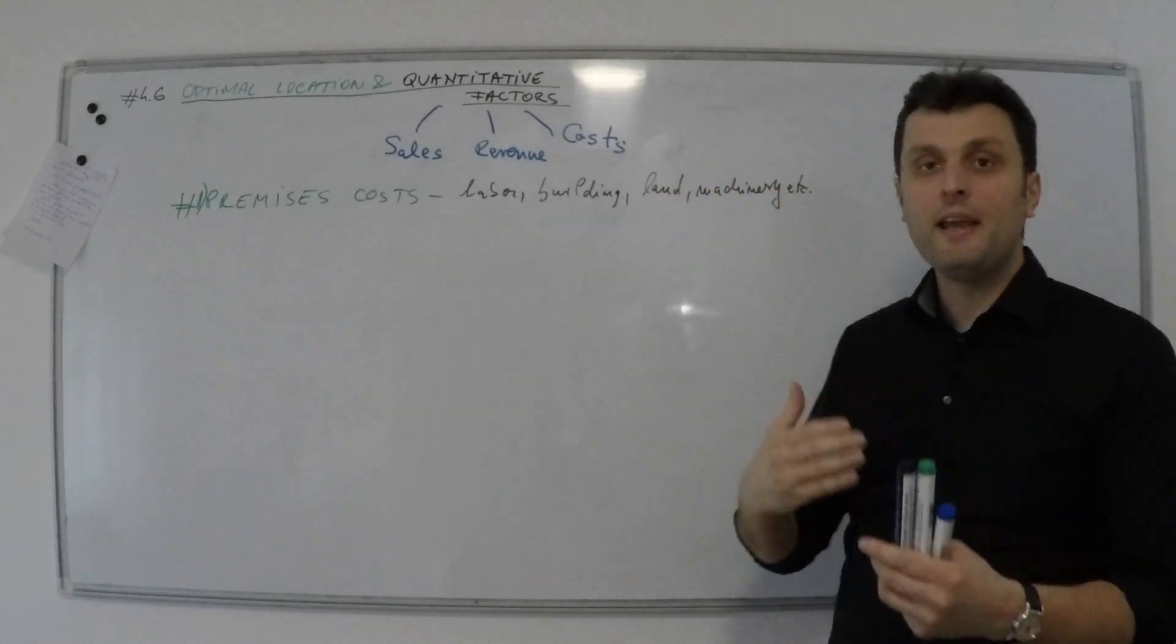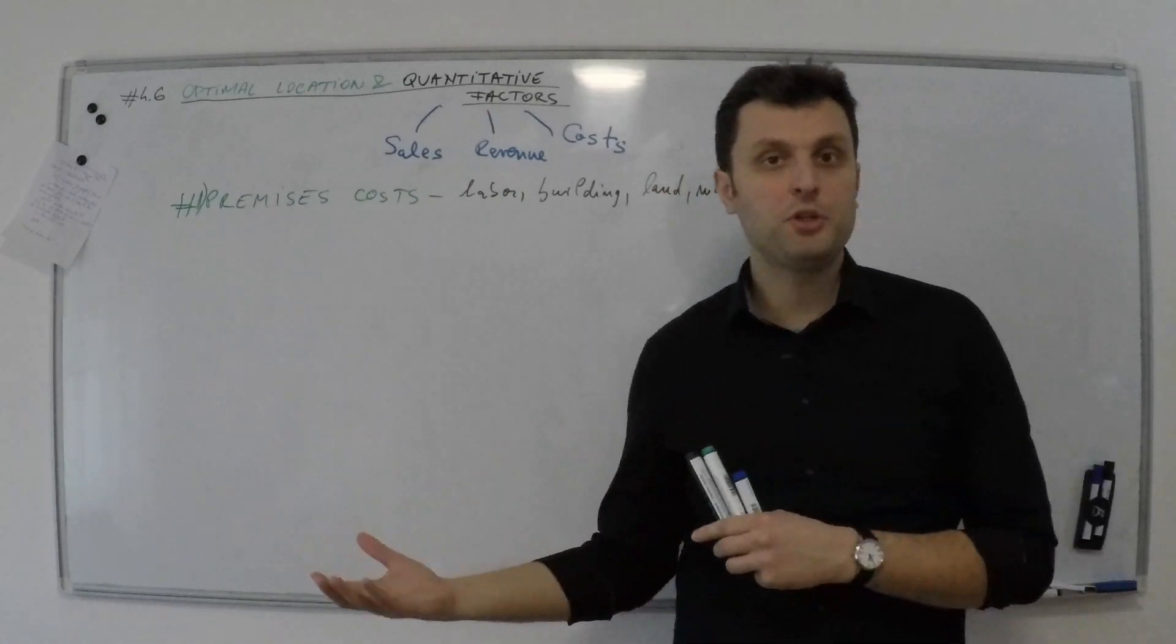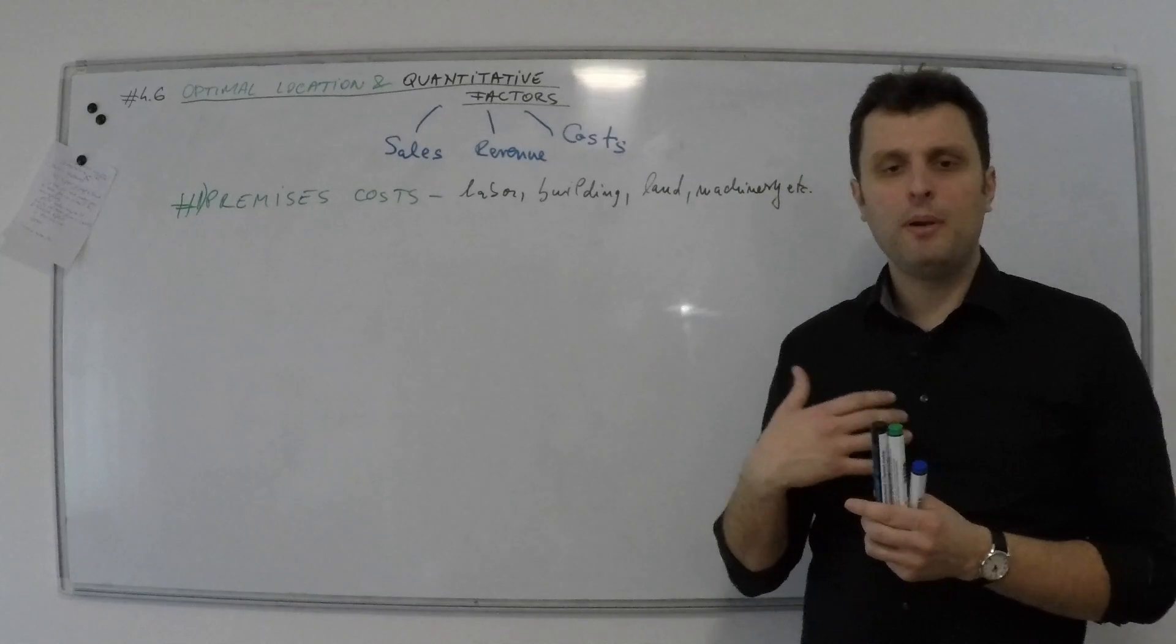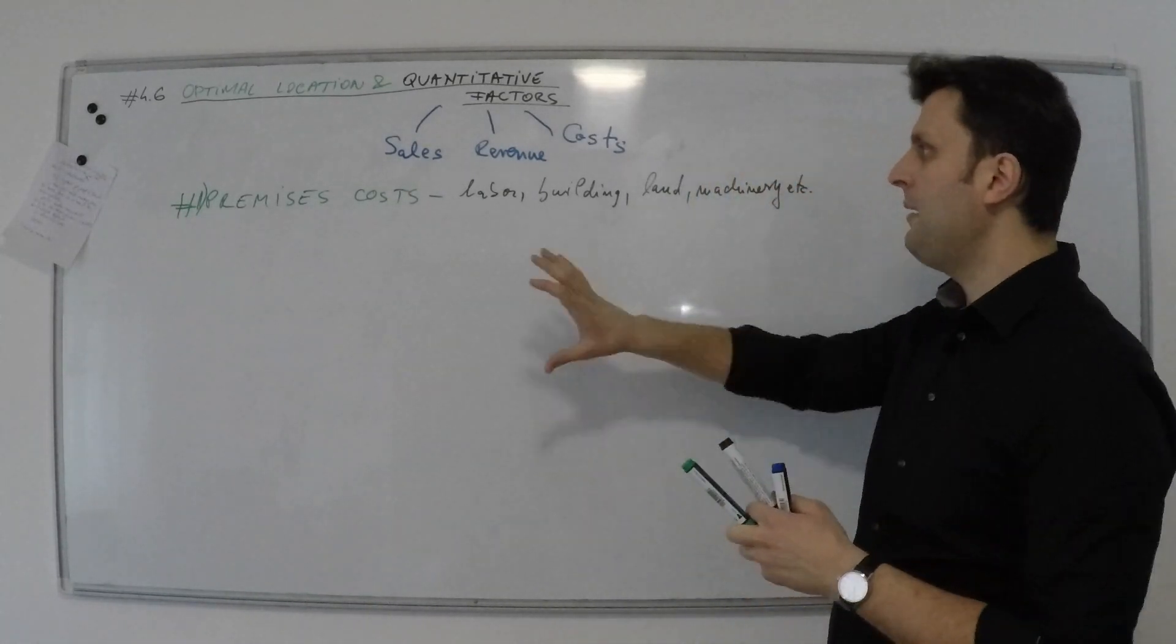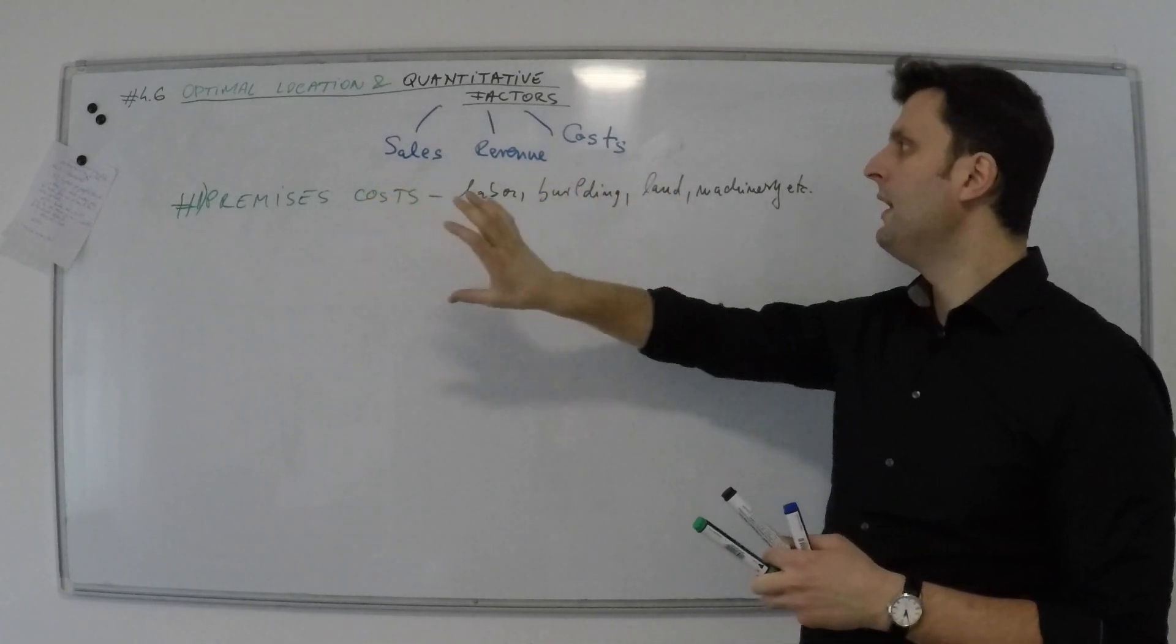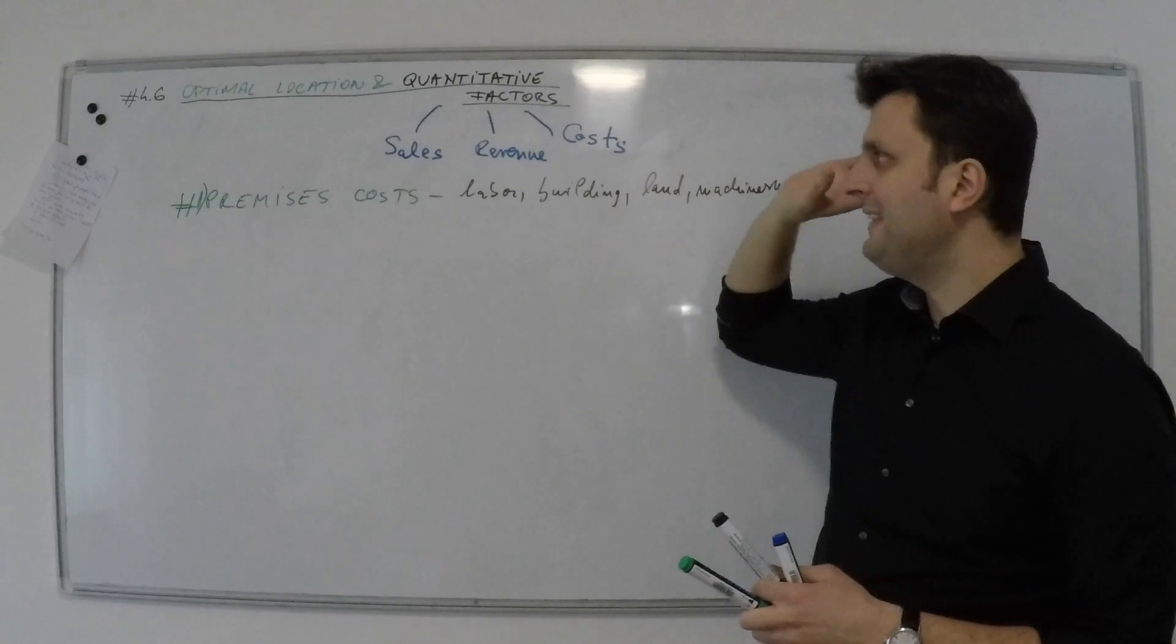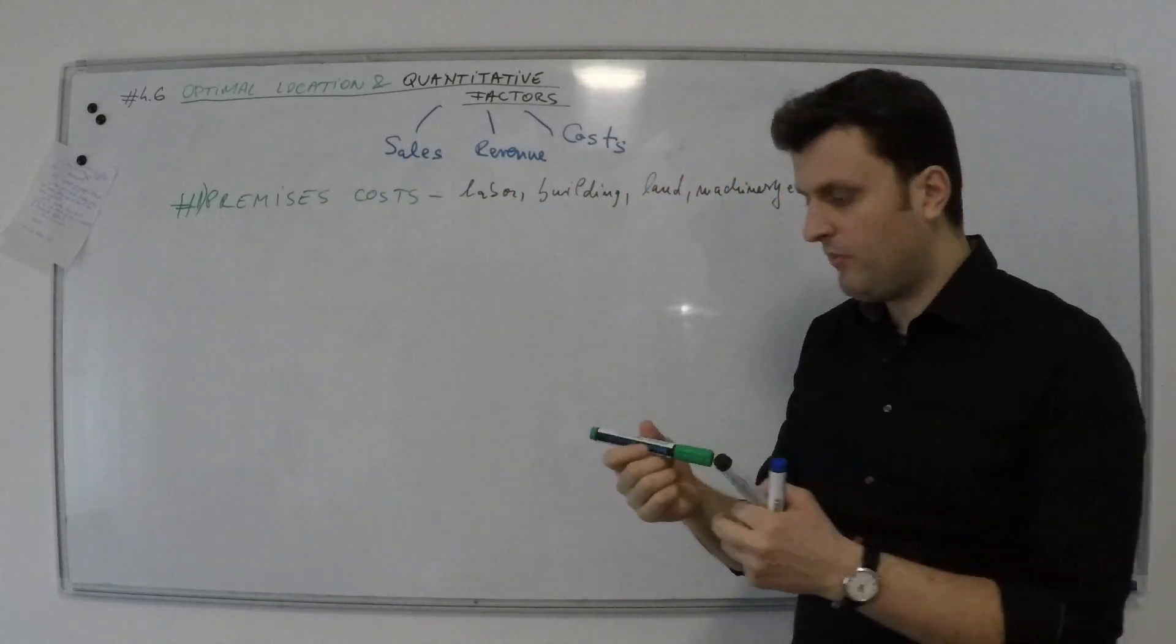Last but not least, can we take machinery there? Can we access suppliers that provide machinery? Do we have people who can operate machinery? Premises costs are extremely important. I put them as the number one type of quantitative factor that can help you decide on optimal location.